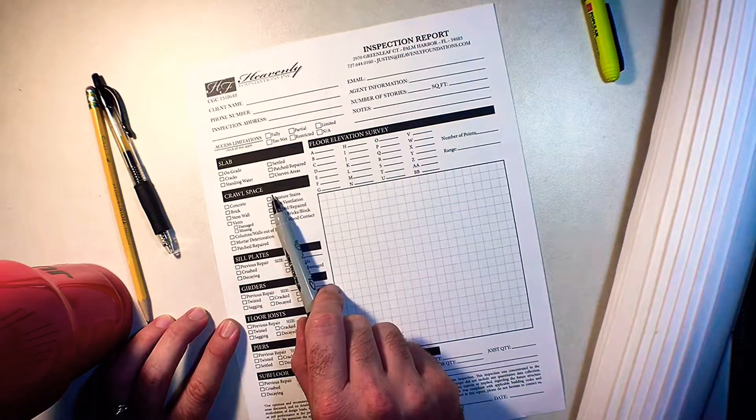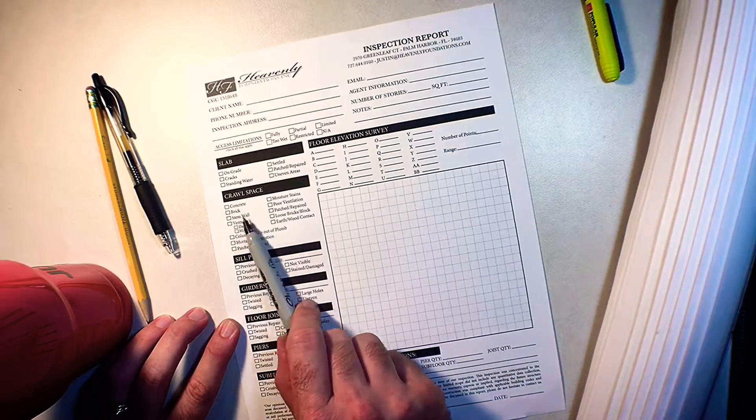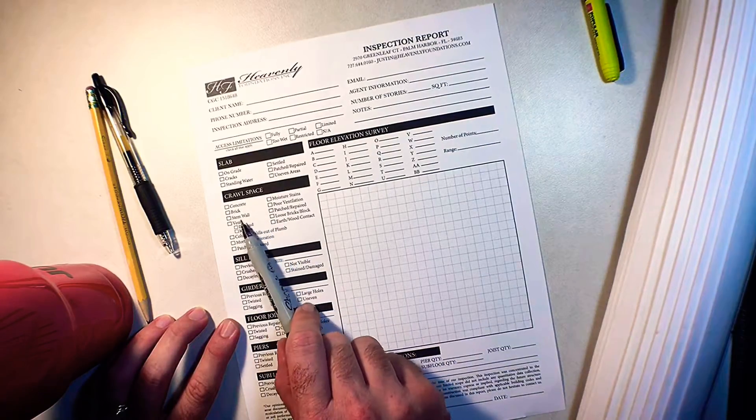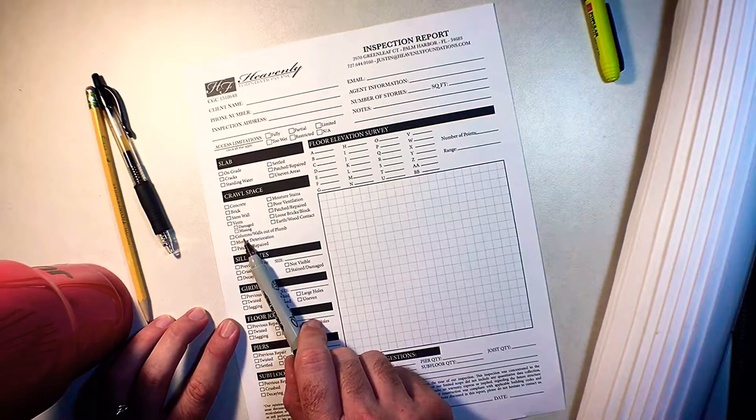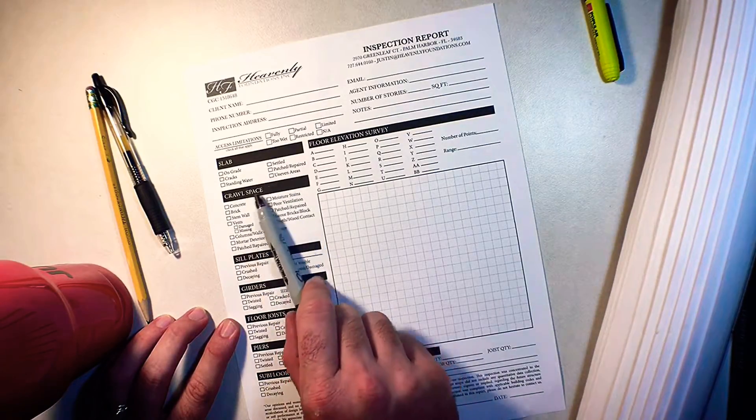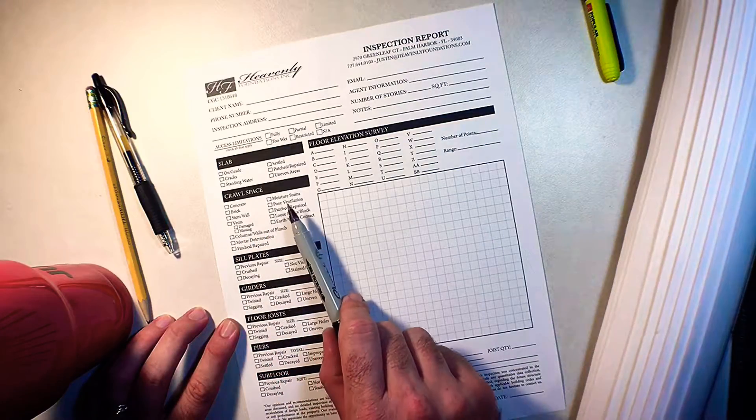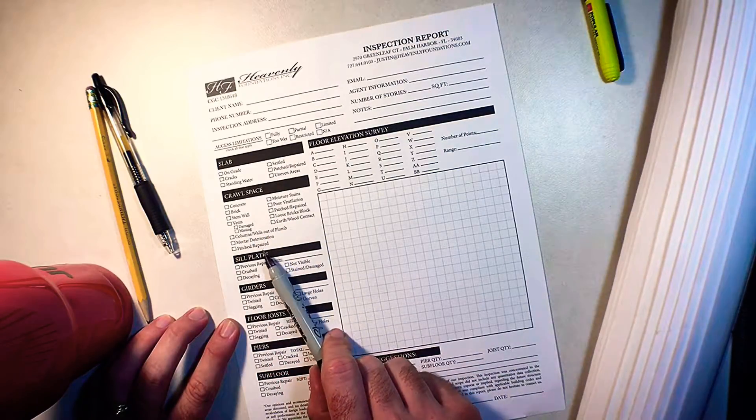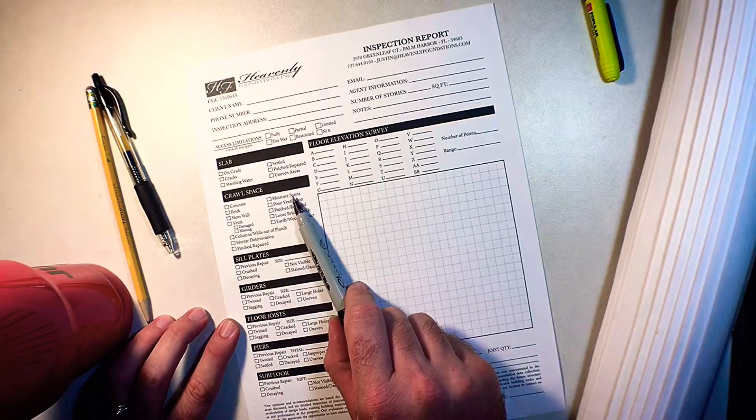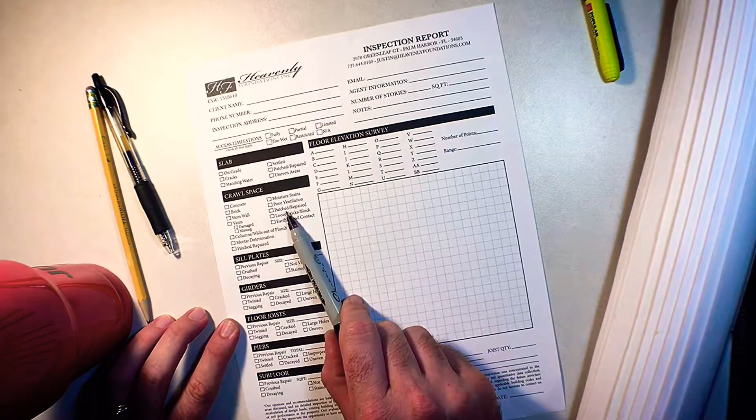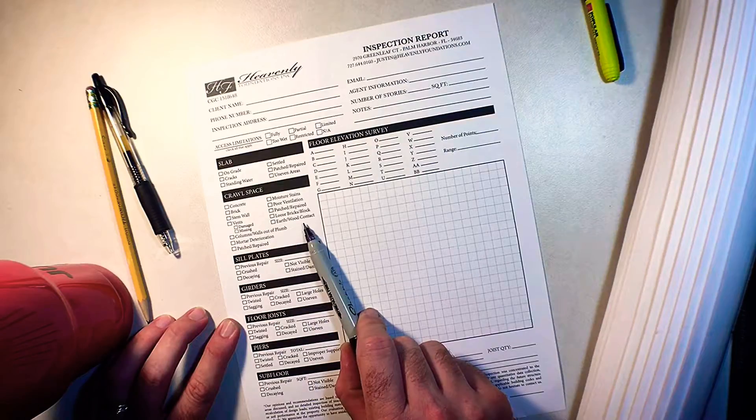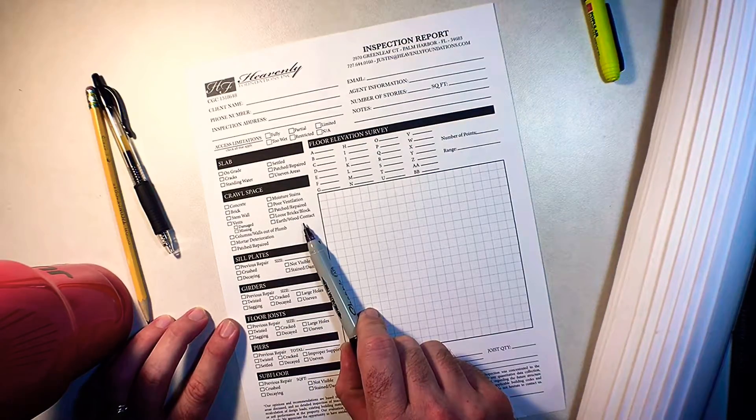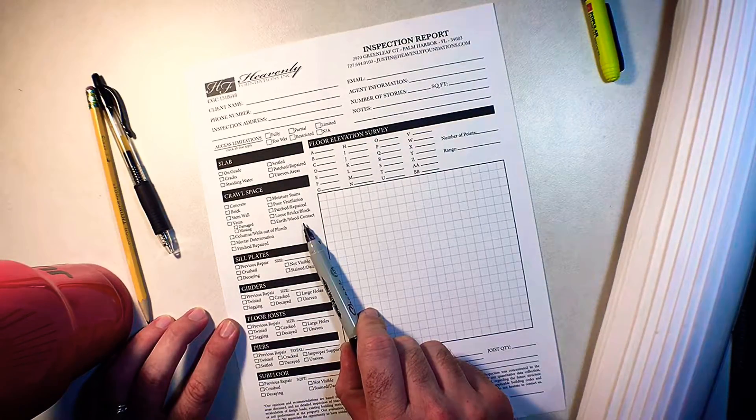The other type of foundation is crawl space. Just a general overview on crawl space foundations. They can be built on a stem wall that's concrete, brick, or they can be built on piers. What we look for when we're in the crawl space is is there any deterioration, is there any patched areas, moisture stains, is there any poor ventilation, is there any patched areas or any earth to wood contact which will have some termites that could get in there and take care of business on some wood members.